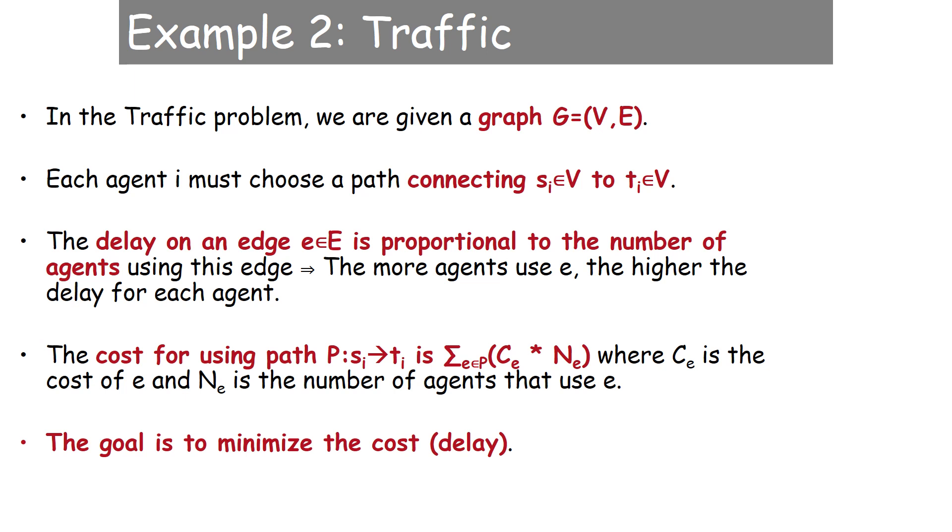Another example which is the opposite of multicast routing is traffic. In the same context, everything is the same, but the delay on the edge is proportional to number of agents. So the only difference is cost of using the path is sigma c times n, not c divided by n. This is very common, especially in Singapore, where the toll amount increases on particular times of the day based on traffic.